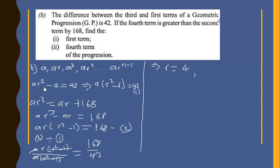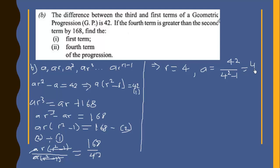To find a, we substitute r = 4 into equation 1: a(4² − 1) = 42, so a = 42 over (16 − 1) = 42 over 15.